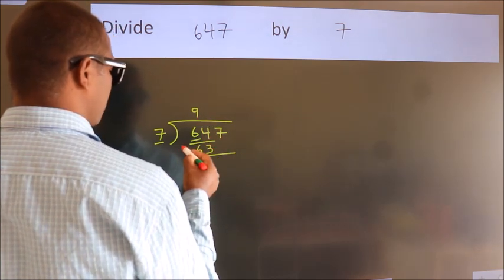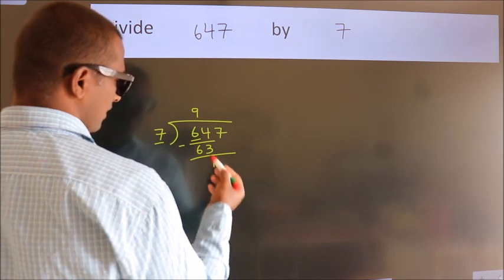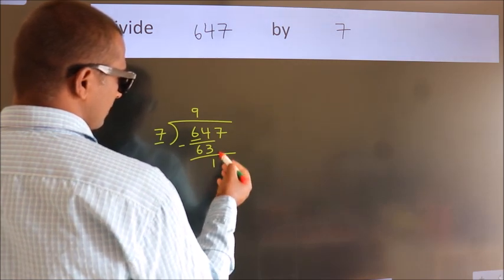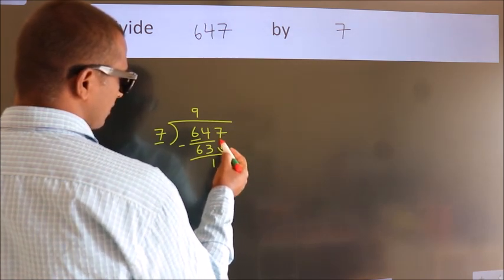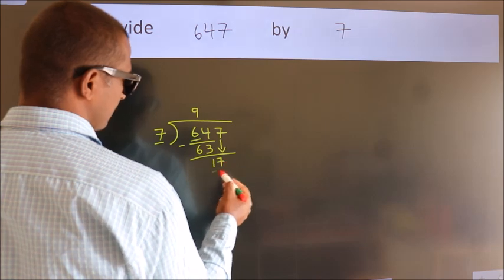Now we should subtract. We get 1. After this, bring down the beside number. So, 7 down. So, 17.